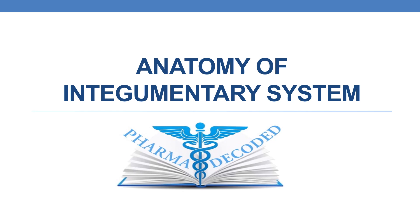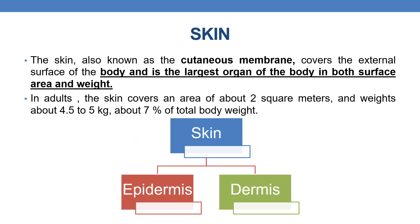Let us discuss the brief anatomy of the integumentary system or skin. The skin, also known as the cutaneous membrane, covers the external surface of the body and is the largest organ of the body in terms of both surface area and weight. In an adult, the skin covers an area of about 2 square meters and weighs about 4.5 to 5 kilograms, that is about 7% of the total body weight.